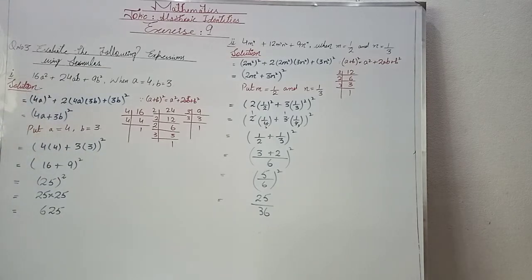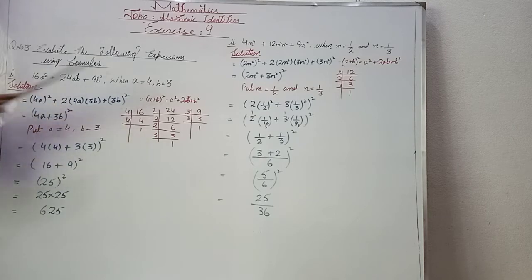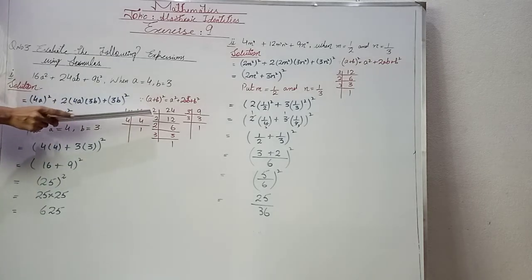Similarly, we find the factors of 24. The factors of 24 are 2 × 2 × 2 × 3.